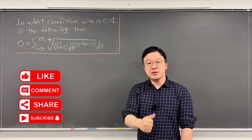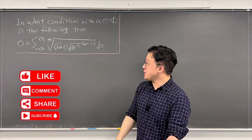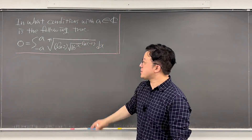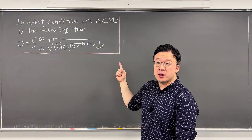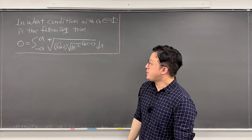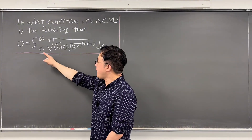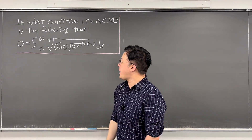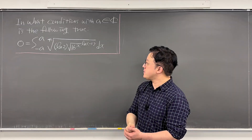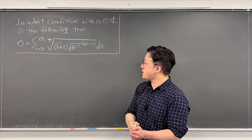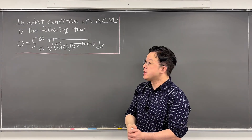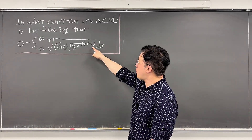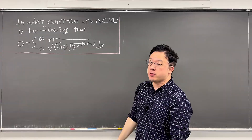Okay, here's the question. For what conditions on A — where A is a complex number — is the following true? The integral from negative A to A of the fourth root of LN(2) times the square root of 16 to the power of x, to the power of LN of negative 1, dx is equal to zero.